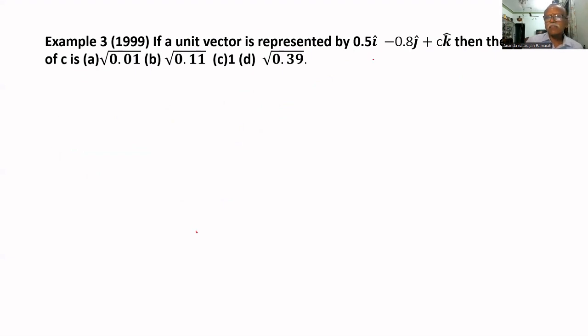If a unit vector is represented, you have to use the cap notation. For vectors, you use the bar. Vector means you have to use the bar. Unit vector means you have to use the cap - A cap, B cap, C cap means unit vector.